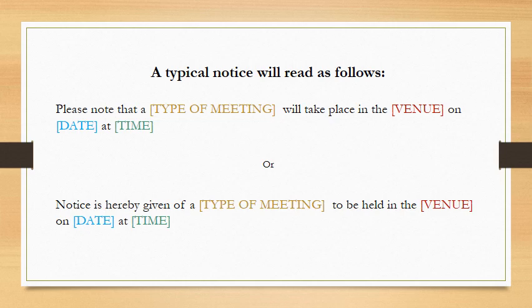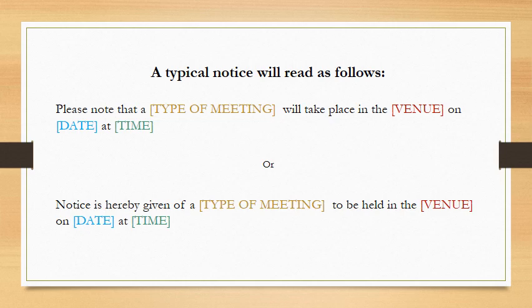If you go to Google Classroom, you will see the templates that show you exactly how to write a notice, and you can print them out and take them into your Paper One examination. Go to your browser and type in classroom.google.com. Click on 'Join Class' and where it asks for a code, put in the code N-W-U-S-R-3-W. Or you can email me at yufkester@gmail.com. I am available to answer questions whenever you want — I do check my email quite often.